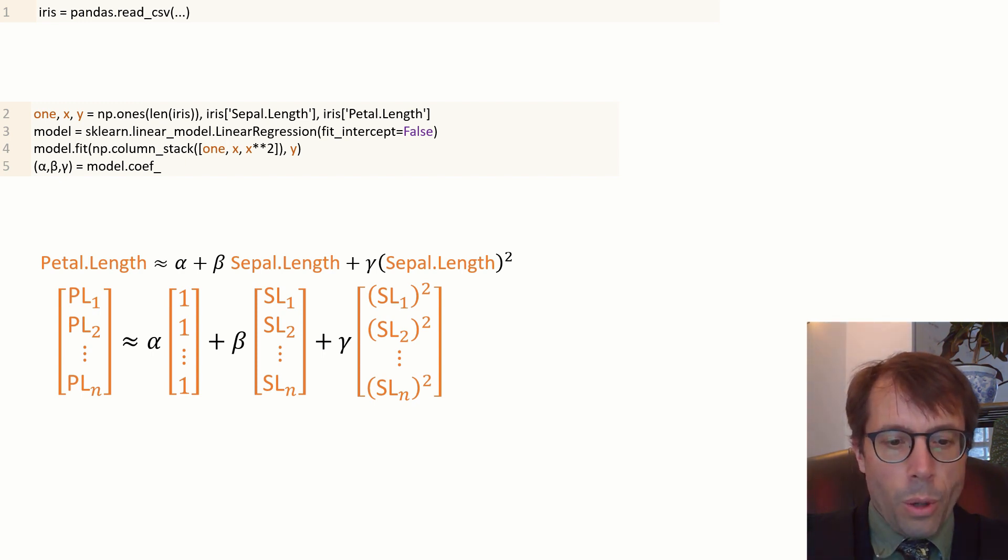I define a model object on line three. I tell it to fit the model on line four. The first argument is my three feature columns stacked together to make a matrix, and the second argument is the response vector y. Python goes away, estimates the parameters, and I get the estimates back by calling model.coef.